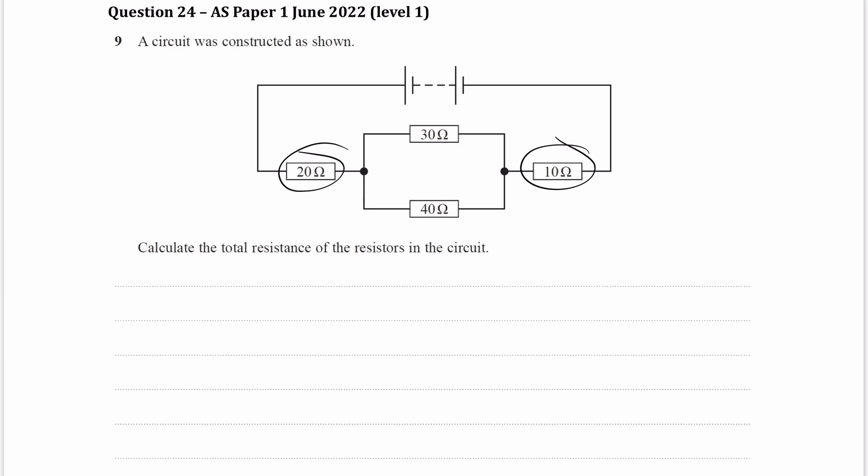So in order to do that, we have to work out the resistance of these two combined. And to do that, we use the resistors in parallel equation. So it'll be 1 over R total is equal to 1 over R1 plus 1 over R2, which in this case would be 1 over 30 plus 1 over 40. And this gives us 7 over 120.